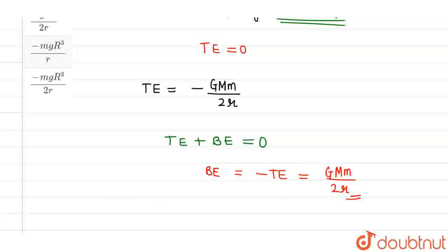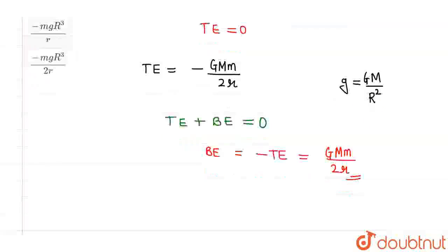But we need to express it in terms of small g, where g = GM/r². This is the value of small g.